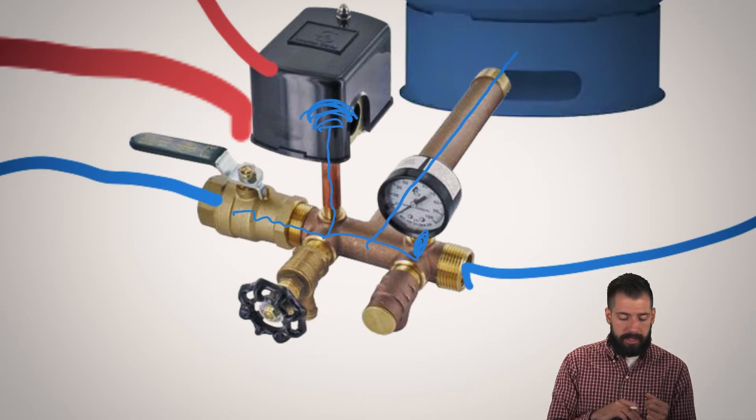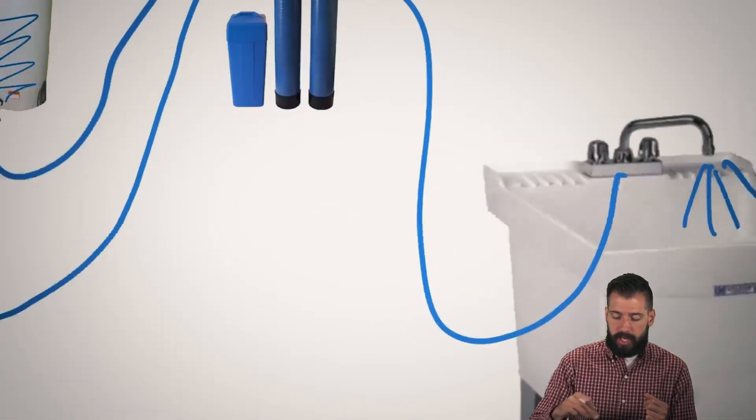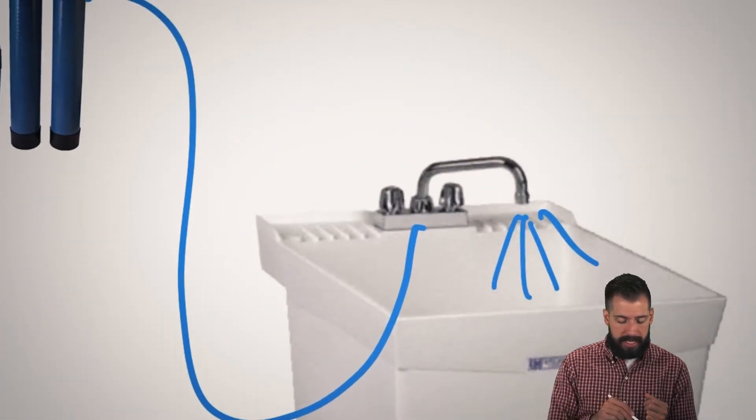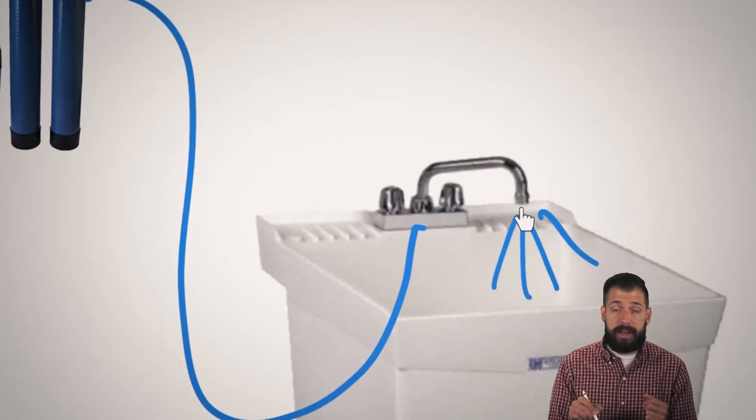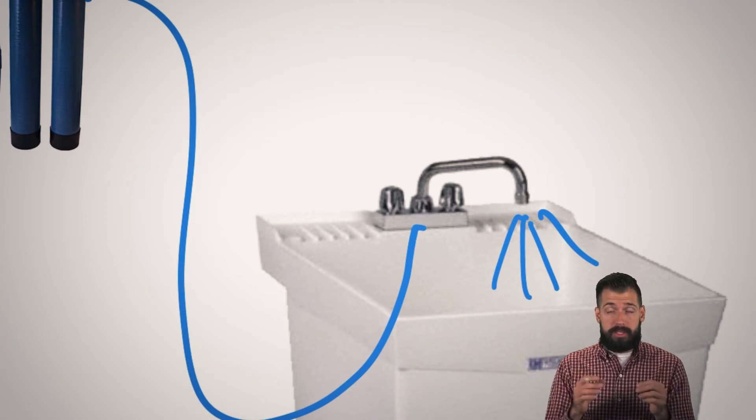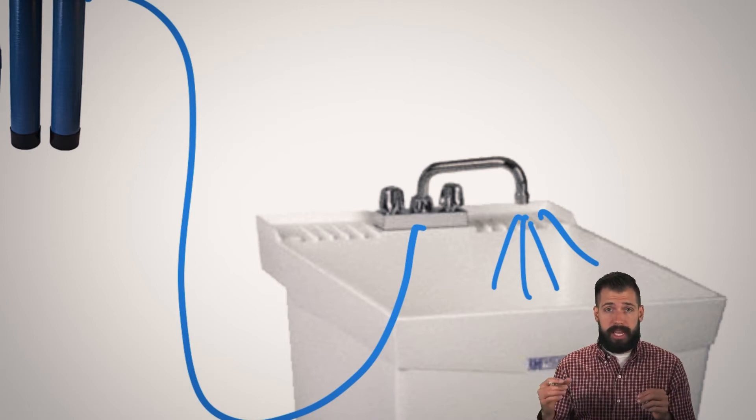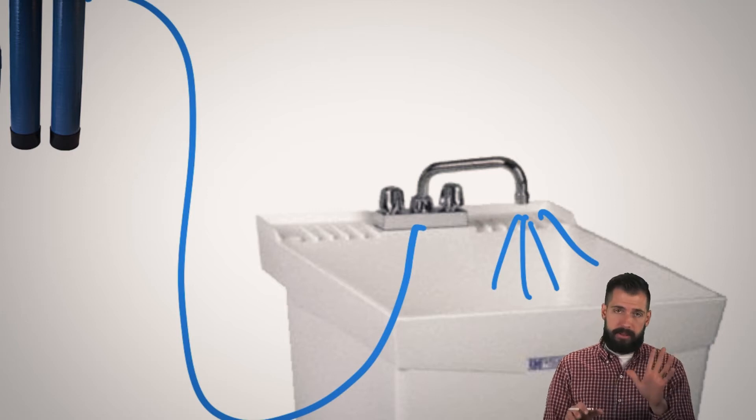If not, then what we might do is connect ourselves to a sink that has a threaded adapter, like a sink like this. Or what we'd like to do is if we have a hose connection on the outside of the house, then we'll connect there.